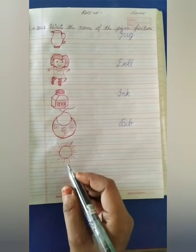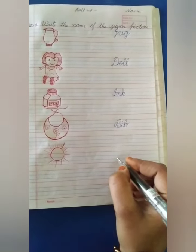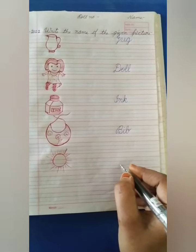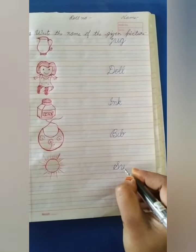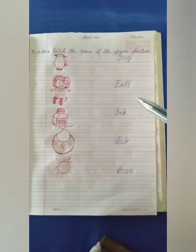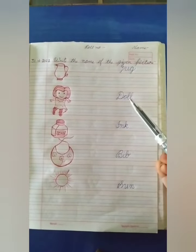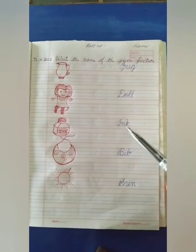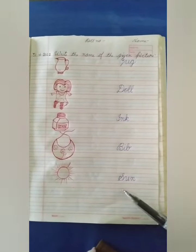Last picture, it's very easy. It's sun. S-U-N, Sun. Okay. J-U-G Jug, D-O-L-L Doll, I-N-K Ink, B-I-B Bib, S-U-N Sun.